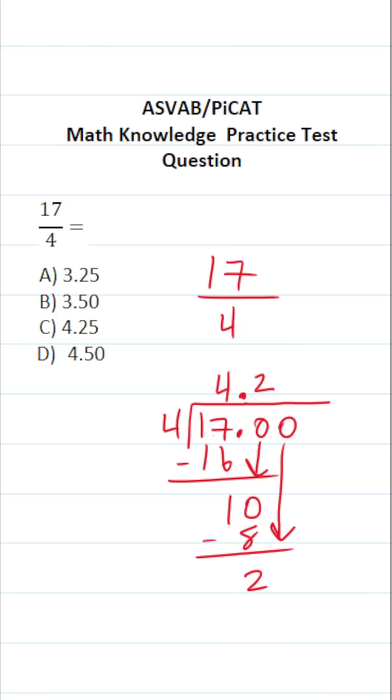Again, we have another zero we can drop down. And we have as many zeros as we need, really. How many times does 4 go into 20? Well, 4 times 5 is exactly 20. Now that we don't have a remainder, we can stop working this out.